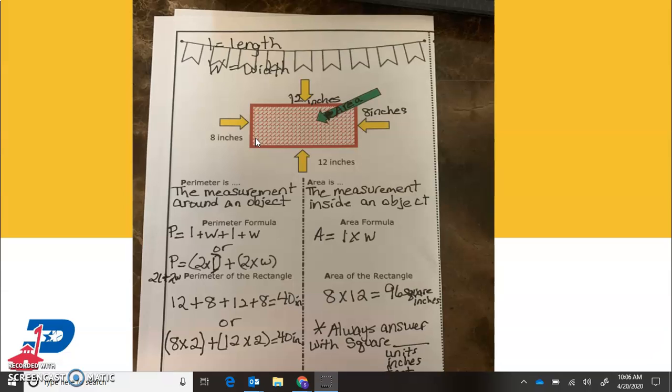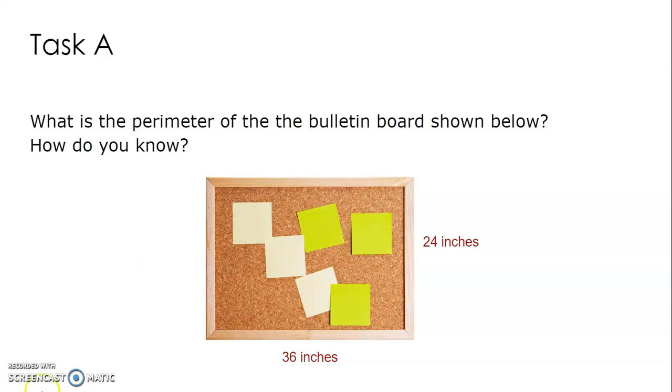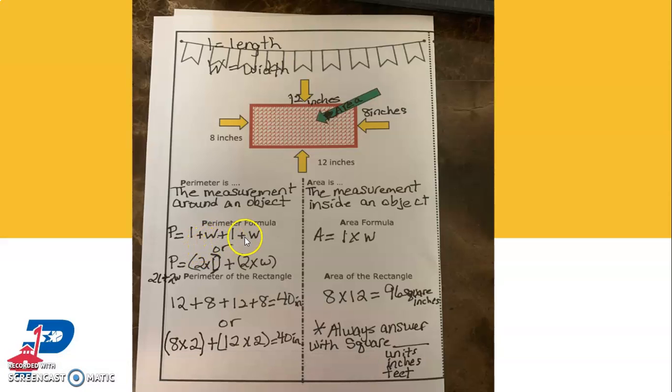So if you look on your reference chart, on the other side of what we've been using, there you'll find two formulas. And the first formula is perimeter. And the formula for perimeter is, and this is an L by the way.